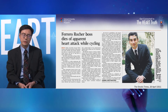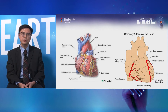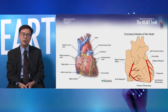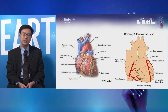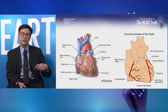Coronary artery disease is a leading cause of poor health as well as death. The coronary arteries — the heart arteries — run on the surface of the heart. They originate from the aorta, the big artery that supplies blood to the rest of the body, and supply blood to the heart muscles. There are three major coronary arteries: the right coronary artery on the right side, and on the left side the left main artery that divides into the left anterior descending artery and the left circumflex artery.